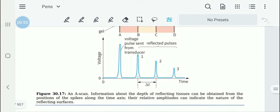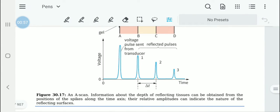This spike information about the depth of reflecting tissue can be found. If you want to find the thickness of something, thickness of the bone or something like that, then that can be found using this.